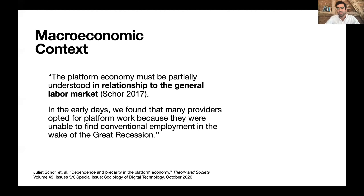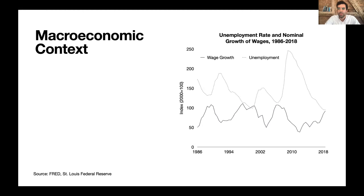In the early days of her research, Schor and associates found that many providers opted for platform work because they were unable to find conventional employment in the wake of the Great Recession. She also points out that in 2018–2019, when the US labor market was tightening, there was a question about the end of the platform economy, because more and more workers were choosing conventional jobs over platform jobs in a tighter labor market.